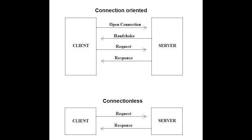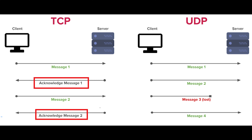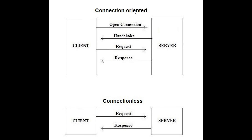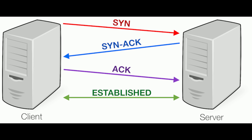Connection-oriented service is used to create an end-to-end connection between the sender and the receiver before transmitting data over the same or different networks. Packets are transmitted to the receiver in the same order the sender has sent them. It uses a handshake method that creates a connection between the user and sender for transmitting data over the network.